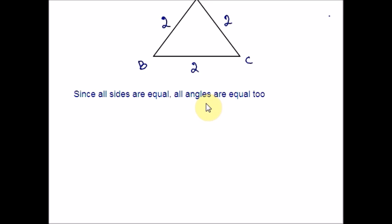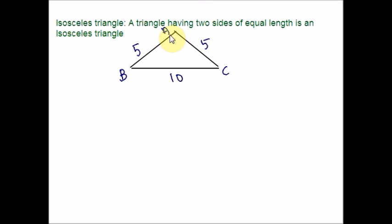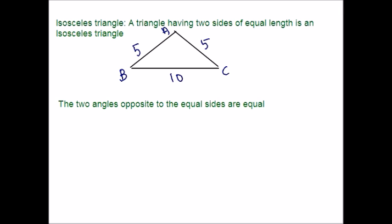Now let us move to the next type of triangle based on sides. The next one is isosceles triangle. Isosceles is a triangle having only two sides with equal length. Any triangle with two sides equal and the third side unequal is said to be an isosceles triangle. Two angles opposite to the equal sides are also equal. In the example, sides AB and AC are equal — both 5 — and the third side BC is equal to 10. By looking at the figure, you can identify which type of triangle it is.